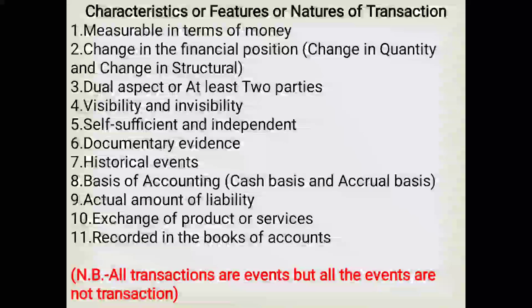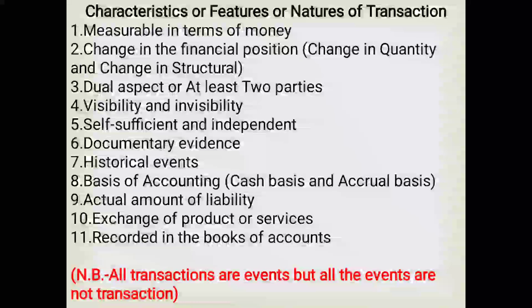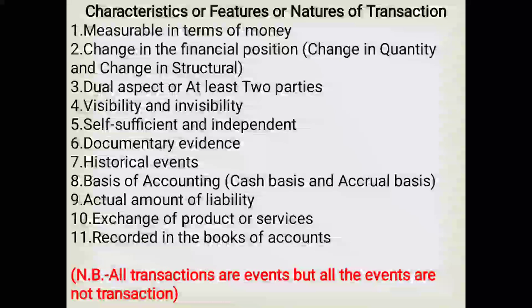Number three: dual entity — a transaction must include two parties; one party receives the benefit while the other gives it. For example, wages paid to a worker of 2,000 — one party is the salary expense and the other is cash. Number four: visibility and invisibility — transactions can be both visible and invisible. Machinery purchased for 10,000 is a visible transaction, while depreciation on furniture of 1,000 is an invisible transaction.